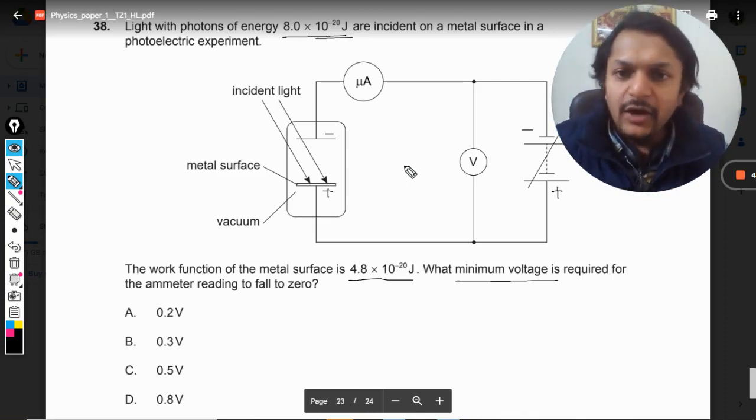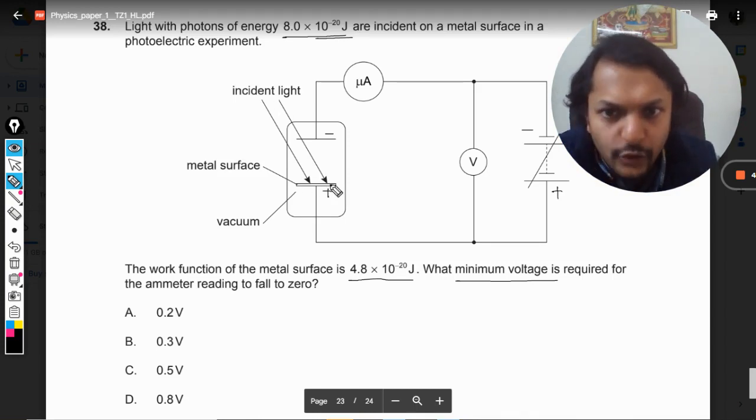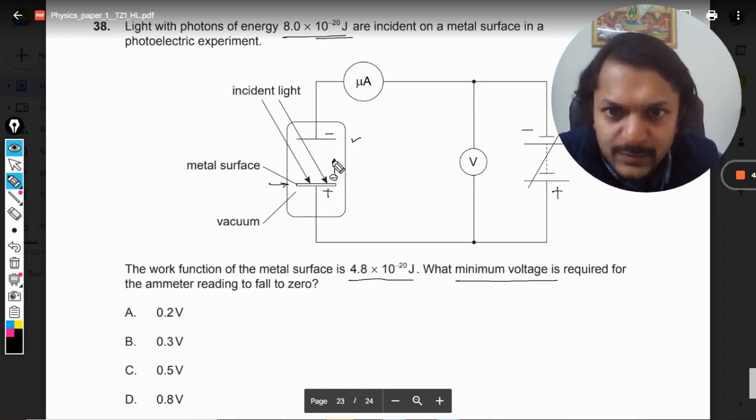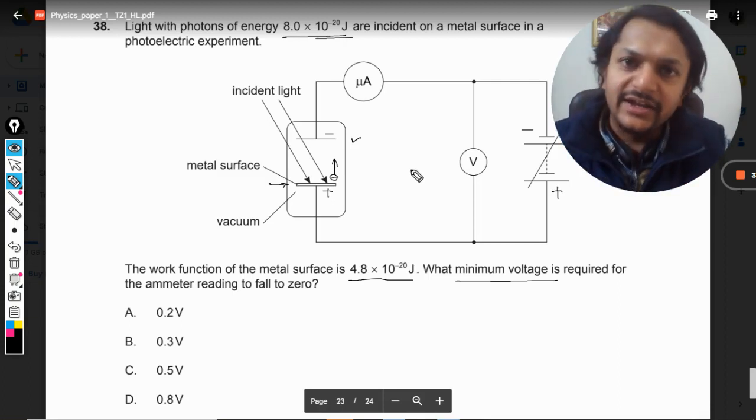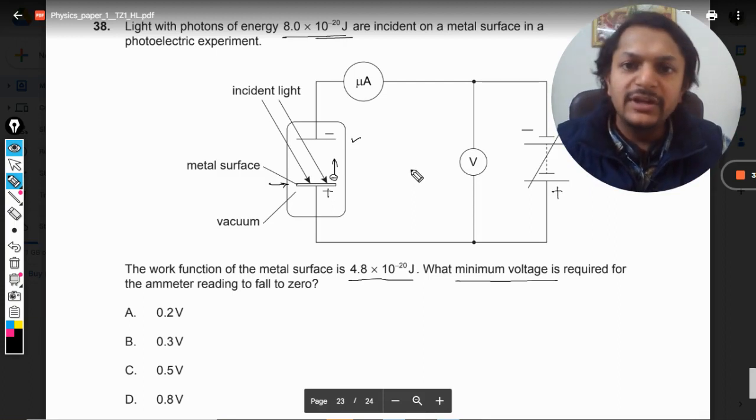Now what happens is the incident light hits this photosensitive material here, so the electrons will get out of the surface and will start moving towards the other plate. But the problem is, because this plate is now negatively charged, the electron will start getting repelled from the plate.